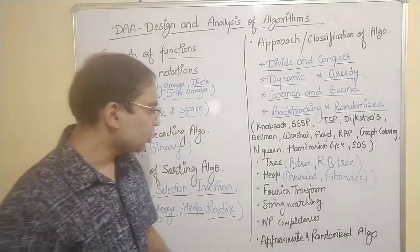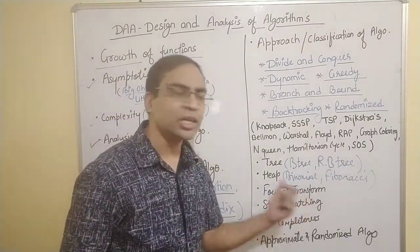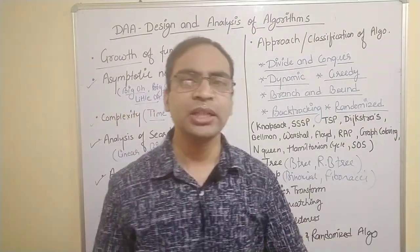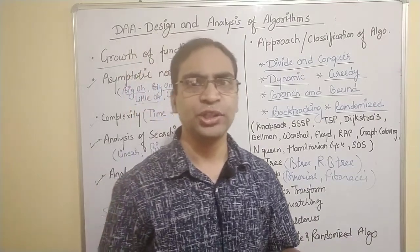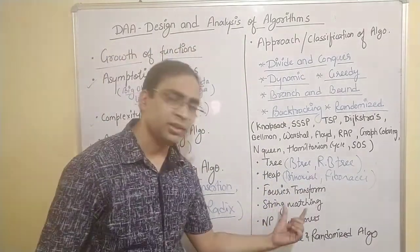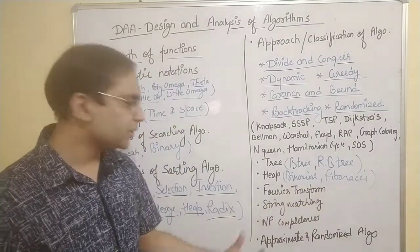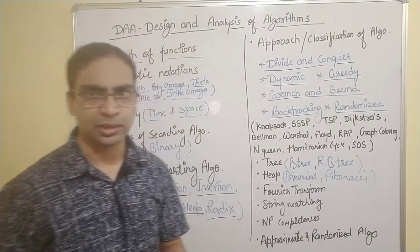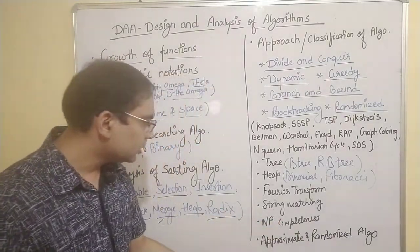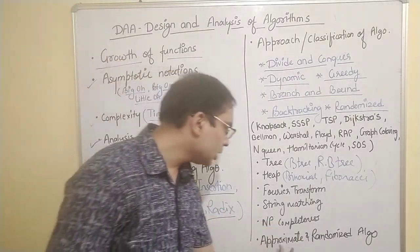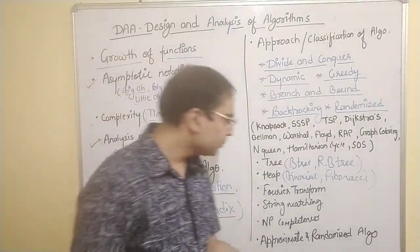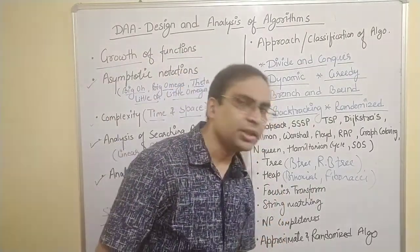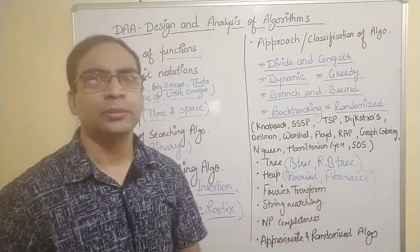We will also be talking about Fourier transforms and string matching. String matching is another important concept related to automata as well as machine learning, and we will study it in detail as a full chapter. Then we will cover NP-completeness, and finally approximate algorithms and randomized algorithms, which will be our end chapters.